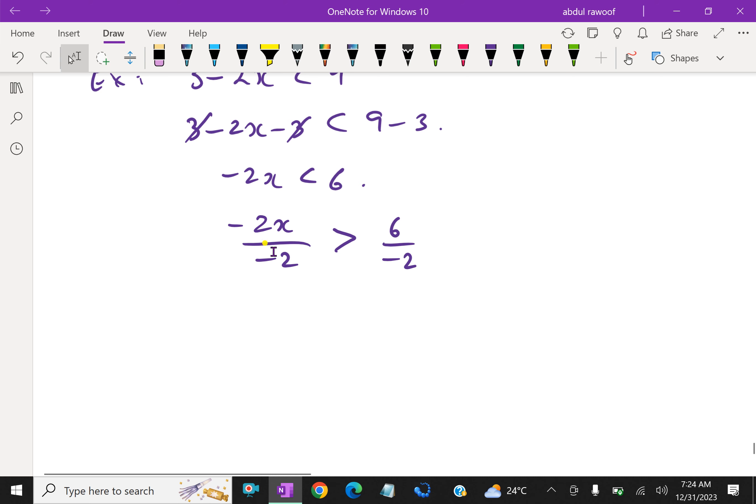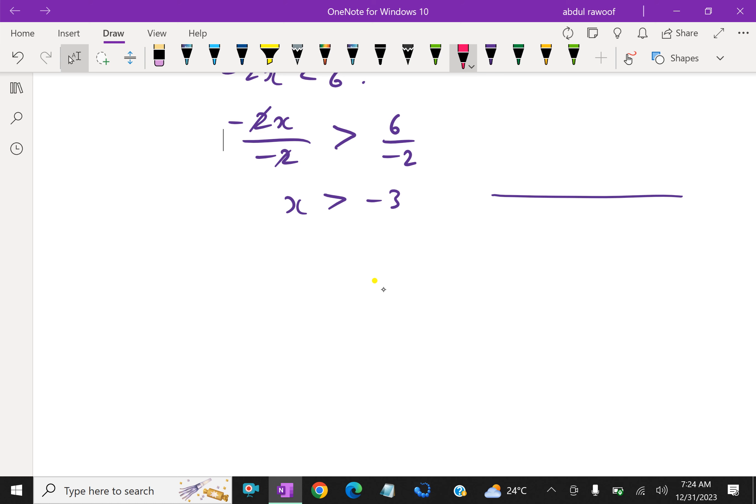If divided or multiplied by a negative number on both sides, we have to interchange the sign. So here, this cuts both. Therefore, x is greater than minus 3. This becomes greater than with the negative sign. x is greater than negative 3.